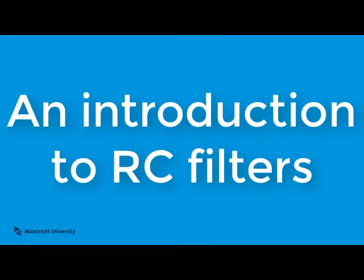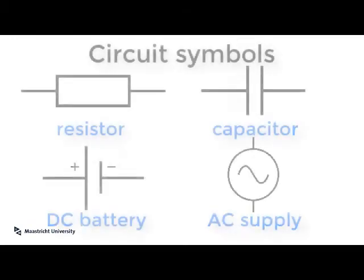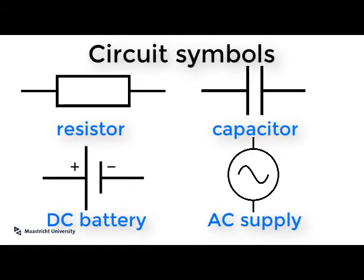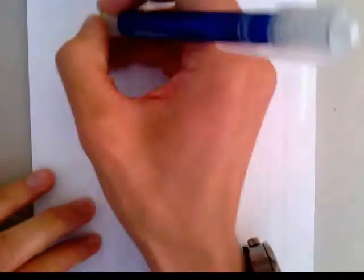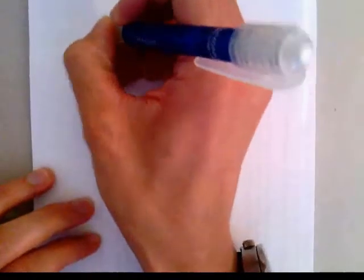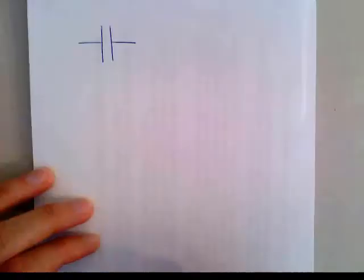This is a very brief overview of how RC filters work. RC filters contain a resistor and a capacitor — that's what the R and the C stand for. Let's have a little bit of an overview of capacitors. The symbol for a capacitor is like this.